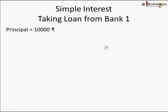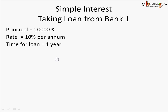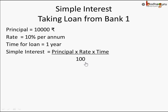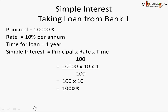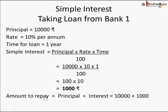If we take a loan from Bank 1, the principal is 10,000 rupees with a rate of 10% per annum - meaning for one year the bank charges 10%, which is 10 rupees for every 100 rupees. Time for the loan is 1 year. Using the simple interest formula PRT by 100: 10,000 × 10 × 1 ÷ 100 = 1,000 rupees interest. So the total amount Sukram has to repay is 10,000 + 1,000 = 11,000 rupees.